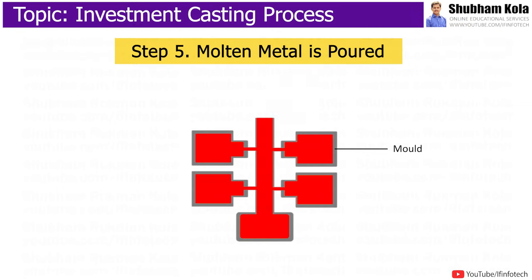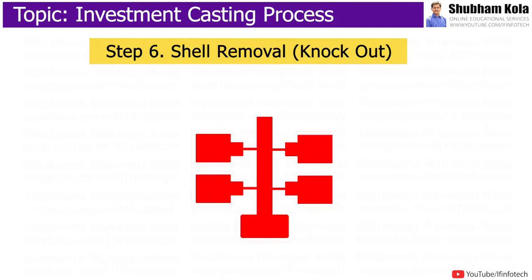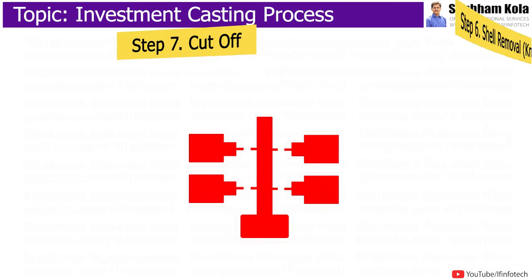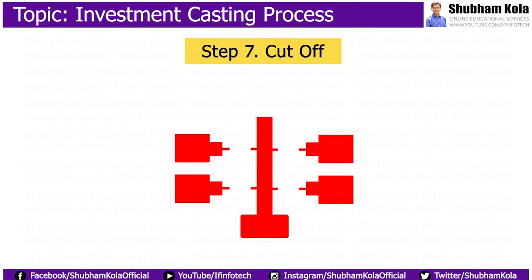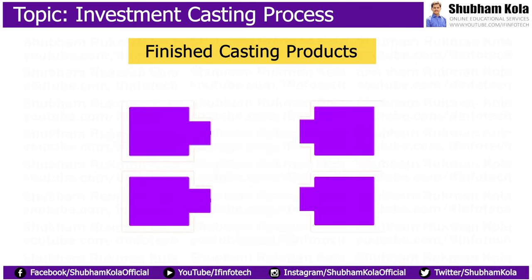Once the metal casting solidifies within the mould, it is removed by breaking the refractory mould. Gates and runners are then cut from the metal casting, and machining is performed to finish the metal casting dimensionally to get the desired dimensional tolerances and surface finish.